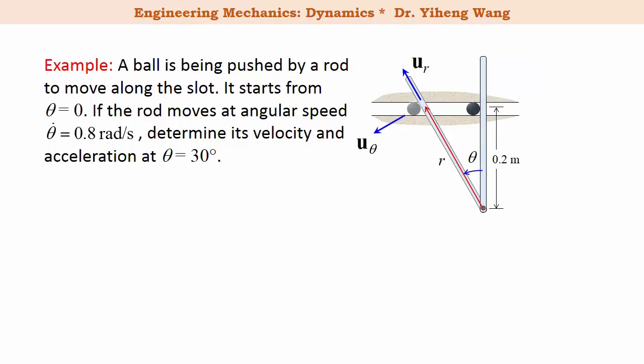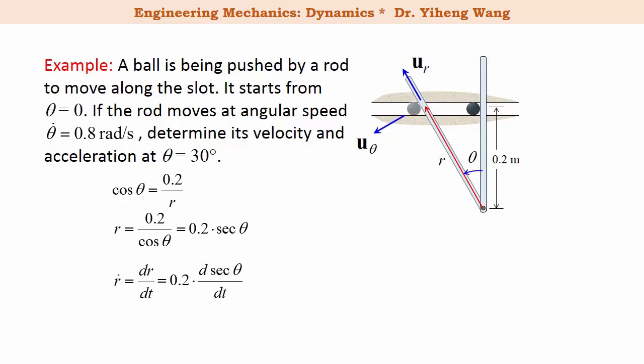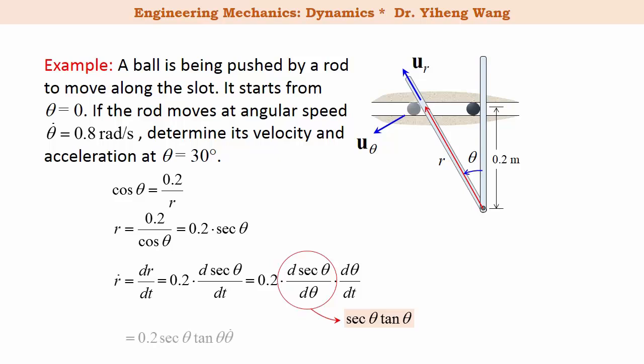We need to write r as a function of theta. According to trigonometry, cosine theta equals 0.2 meters over r, therefore r equals 0.2 over cosine theta, which is 0.2 times secant theta. Taking the time derivative using the chain rule: ṙ = dr/dt = 0.2 · (d(sec θ)/dθ) · (dθ/dt). Since d(sec θ)/dθ = sec θ · tan θ, and dθ/dt is simply θ̇ (the angular speed), therefore ṙ = 0.2 · sec θ · tan θ · θ̇.